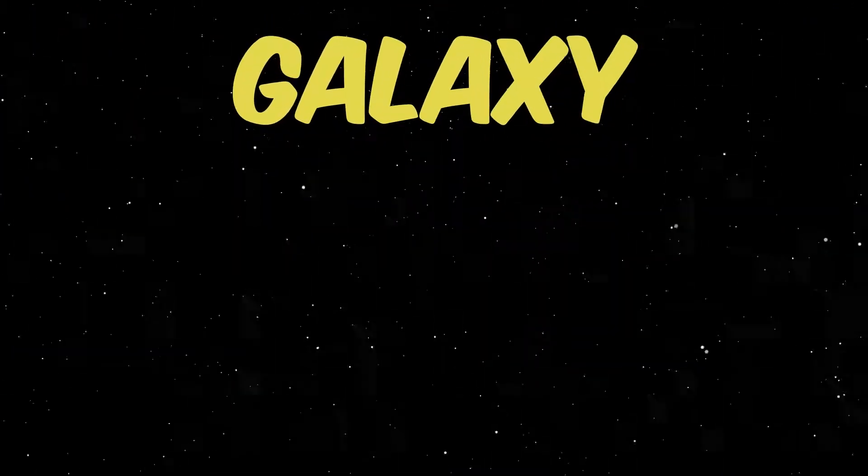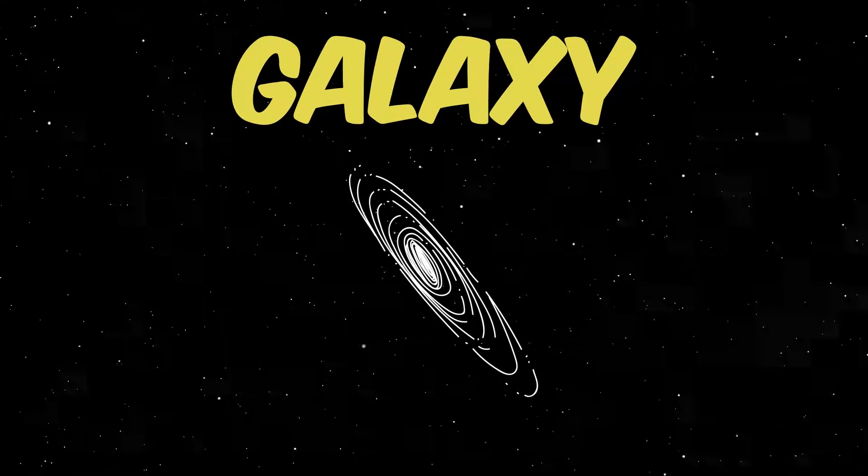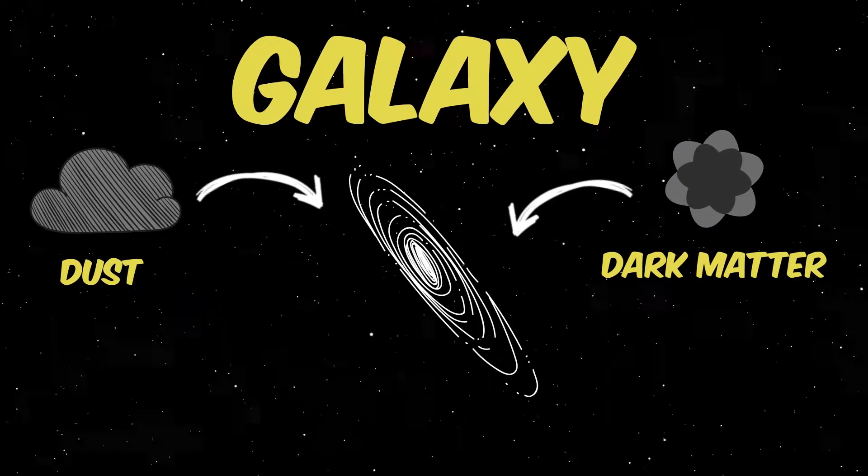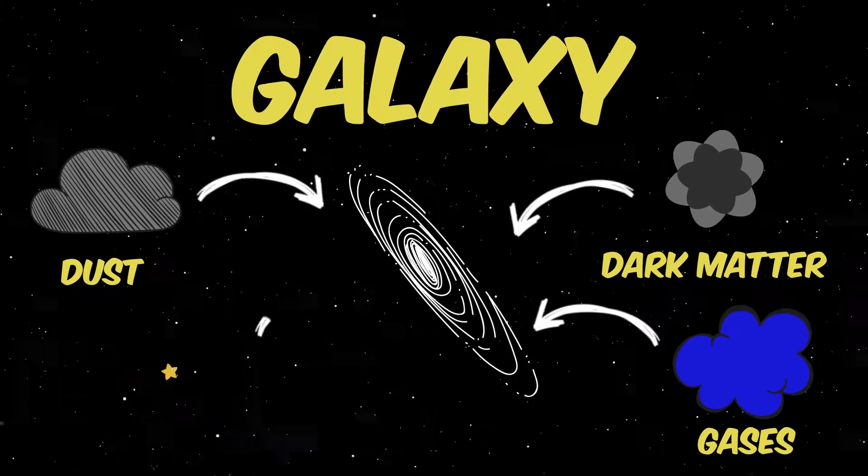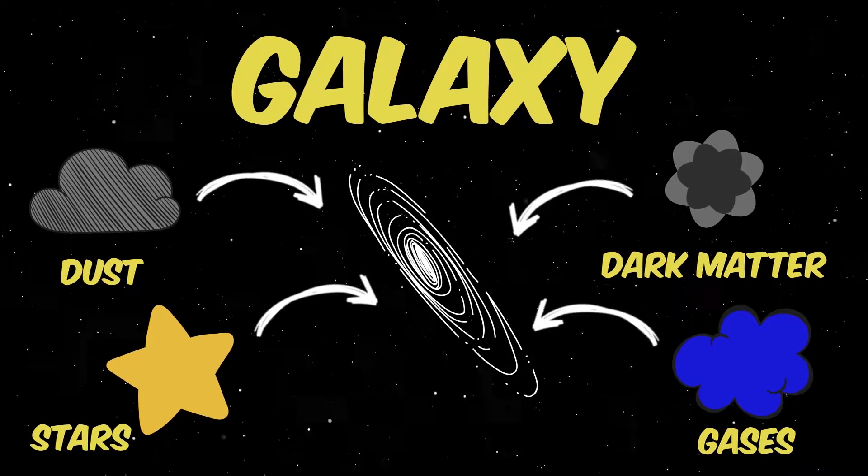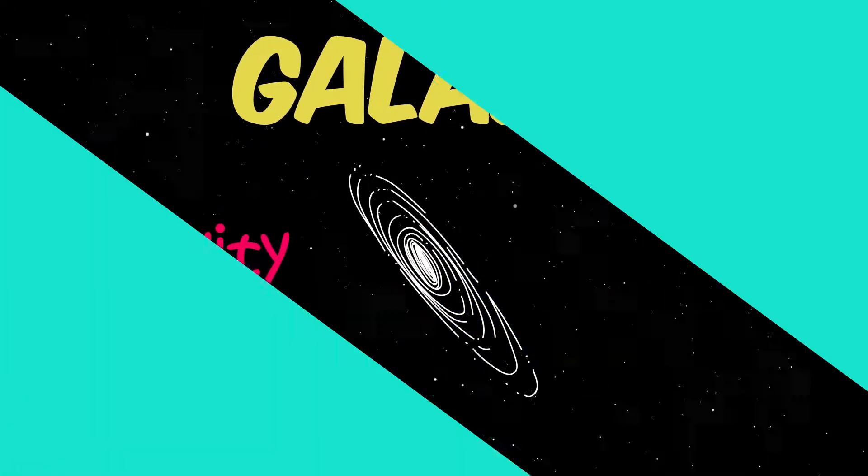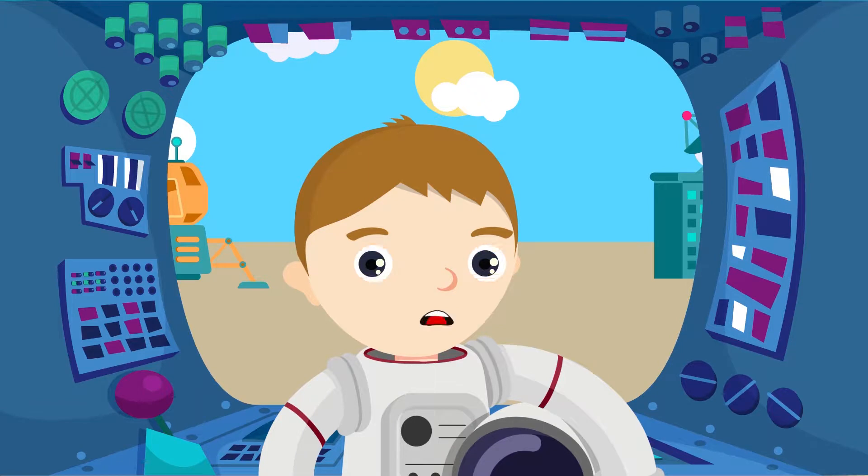Simply put, galaxies are huge collections of matter, possibly dark matter, dust, gases and of course, stars. These are all held together by gravity. There are many different types of galaxies, and many different shapes and sizes of these galaxies. These are all weird and wonderful places, with most of them yet to be discovered.